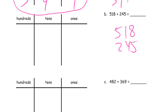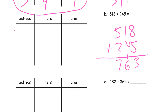518 plus 245. Start with our ones digits first. 8 plus 5 is 13. I have to compose a 10. Add it to our other tens digits. 1 plus 4 is 5, and that one more is 6 tens. And then five hundreds plus two hundreds is seven hundreds. Drawing 518.